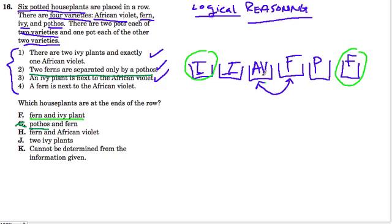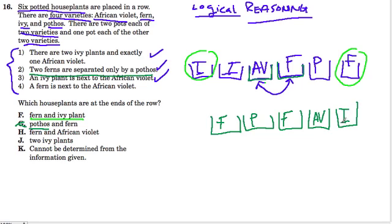But let's remember that the African violet needs to be next to a fern. That's what we've established, but the African violet could be next to this fern over here. So we would have a fern, a pothos, a fern, an African violet, and then an ivy, and another ivy. So it looks like so far we haven't changed anything, right, because we still have the fern and ivy on the outside.